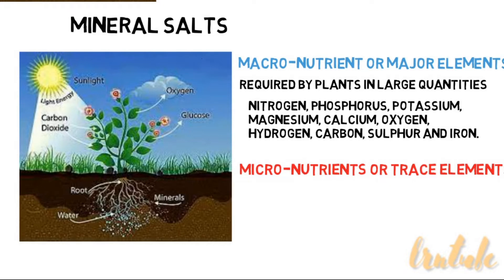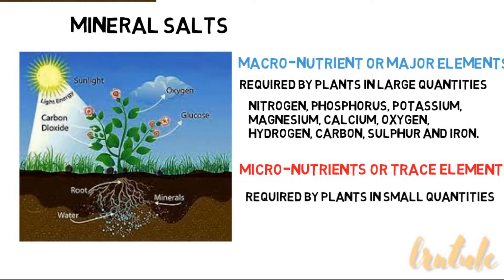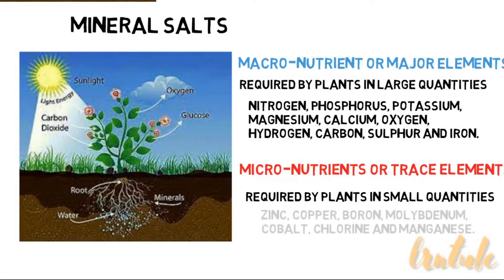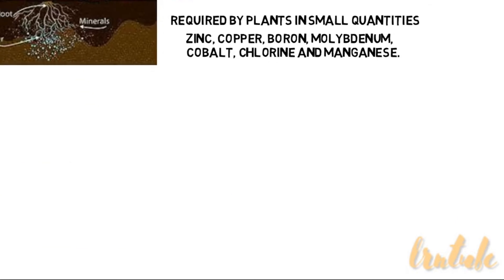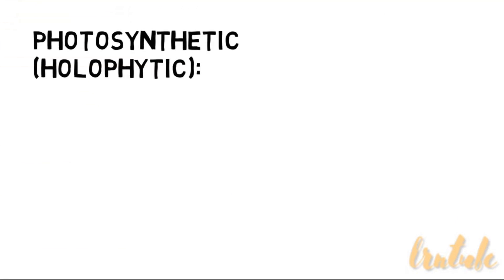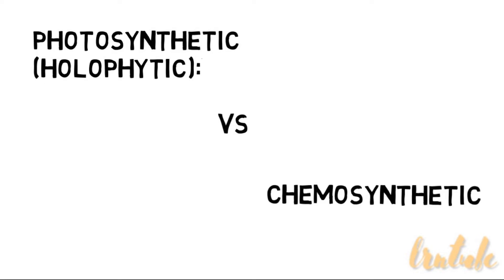Micronutrients or trace elements are required by the plant in small quantities. Examples are zinc, copper, boron, molybdenum, cobalt, chlorine, and manganese. There are two types of autotrophic nutrition: photosynthetic or holophytic nutrition, and chemosynthetic nutrition.